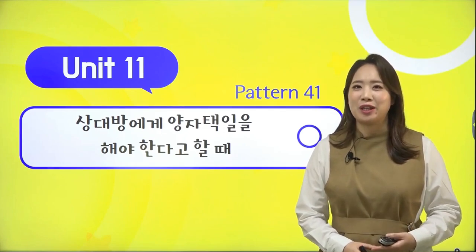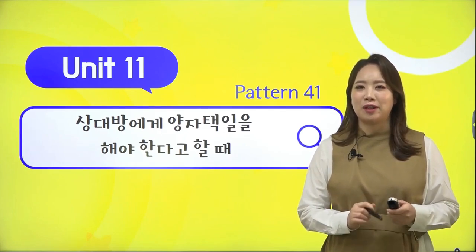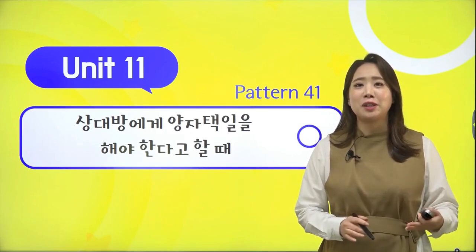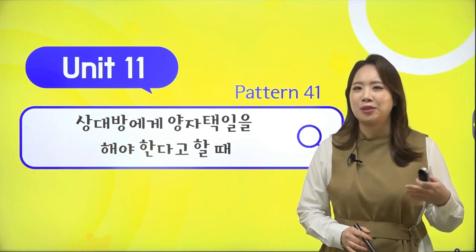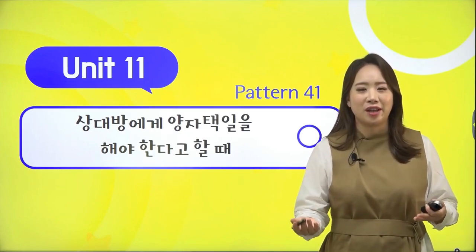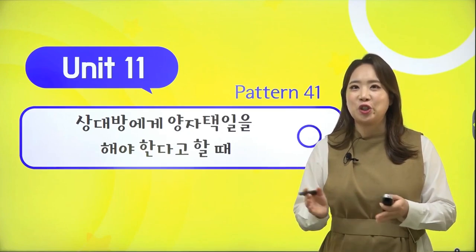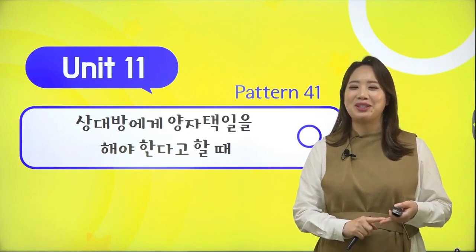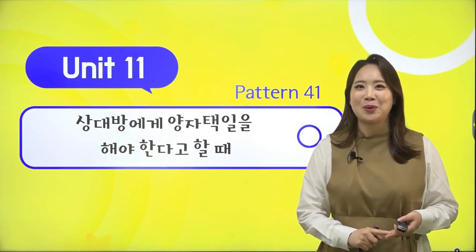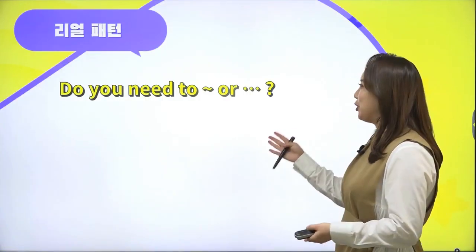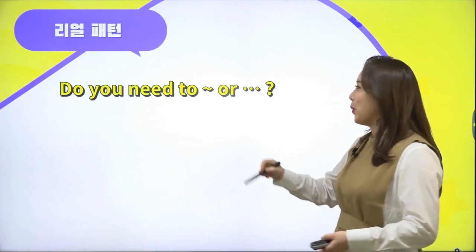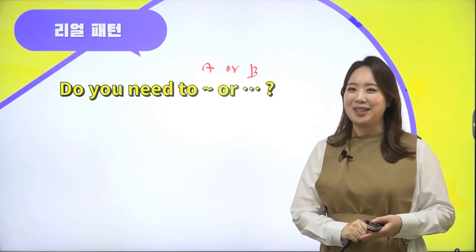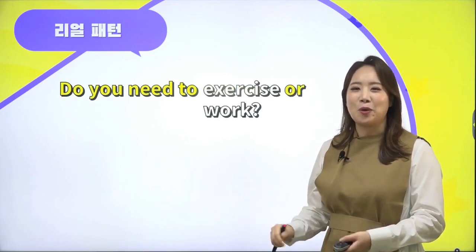안녕하세요, 2080 리얼잉글리시의 Stella Chay입니다. 일상생활을 하다 보면 양자택일에 대한 상황이 생길 수 있잖아요. 대화 안에서 친구가 '야 너 살 빼야 돼, 혹은 살이 쪄야 돼'라고 양자택일에 대한 얘기를 'Do you need to A or B?'의 형태로 만들어 볼 수 있는데요. 이 표현을 예문으로 살펴보도록 하죠.